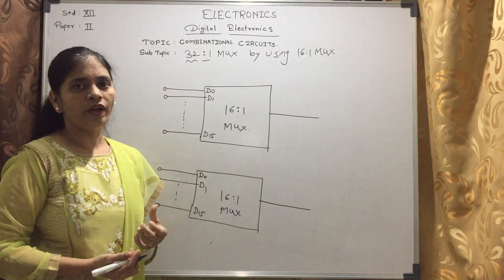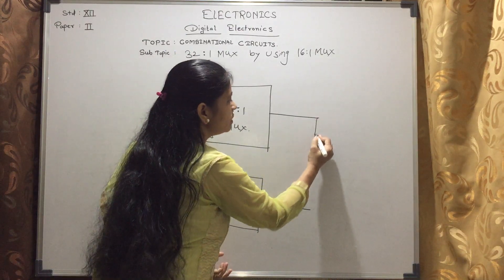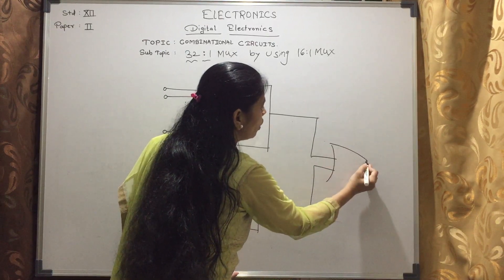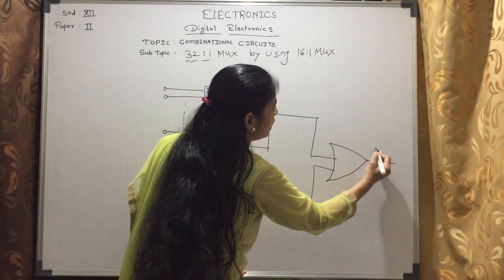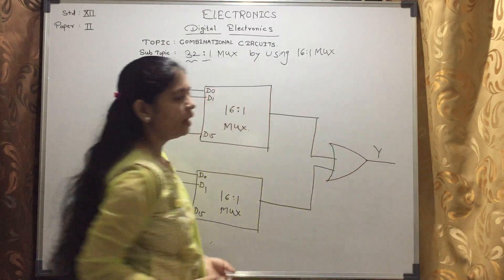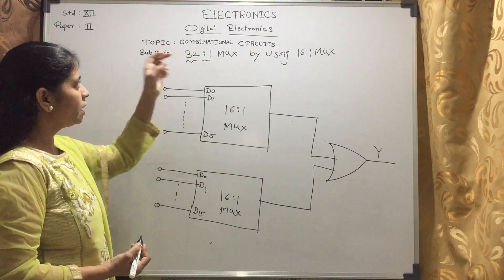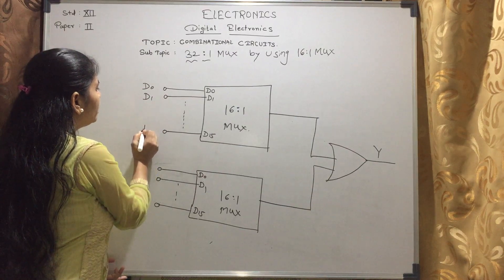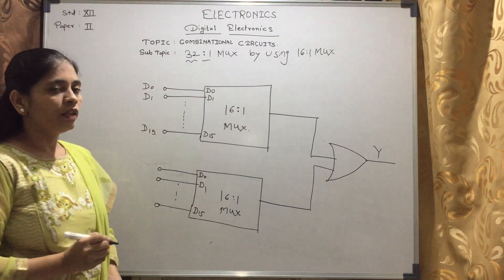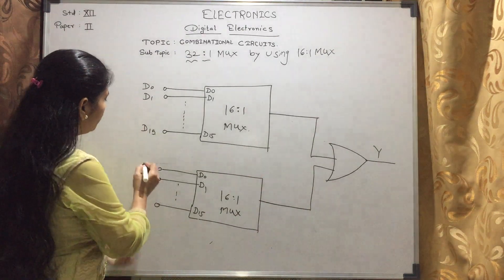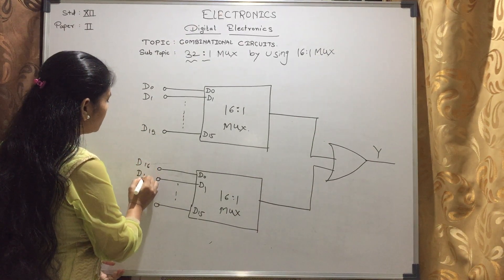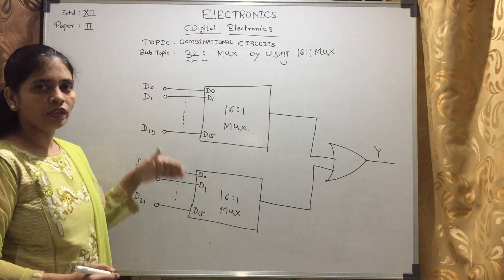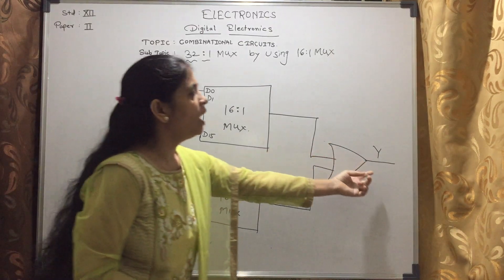Now, to get a 32-to-1 MUX, we have to connect the 2 outputs of each multiplexer using an OR gate. This is the OR gate, and from it we get 1 output. The first MUX handles inputs D0 to D15, and the second MUX handles D16 to D31, giving us a total of 32 inputs with 1 output.